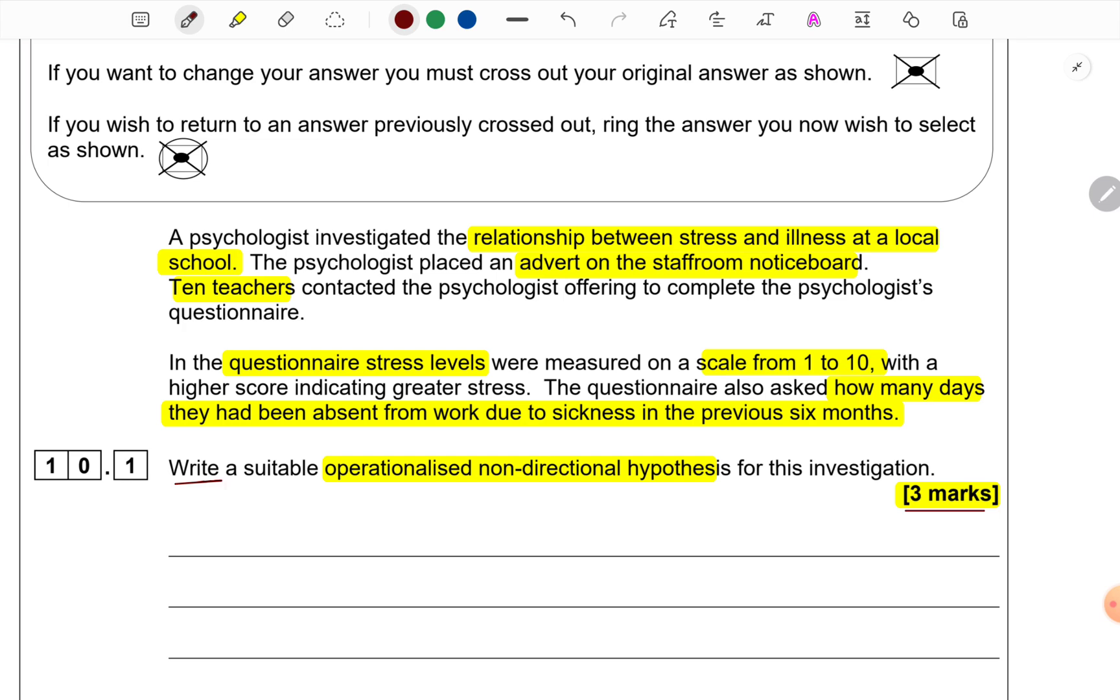The marks are coming from the question directly. They want us to write an operationalized non-directional hypothesis. Operationalization means that you will have to present the dependent variable in measurable terms. So, if you see, in this scenario, there are two dependent variables which you must have identified.